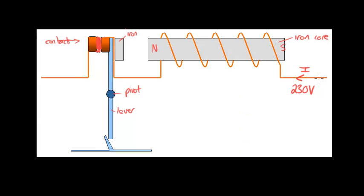If that current for some reason gets too high, maybe there's a short circuit or a fault somewhere, then that means there's a higher current flowing in the electromagnet, which means it has a stronger magnetic field, a stronger magnetic pull. And it pulls this iron and attracts it inwards.